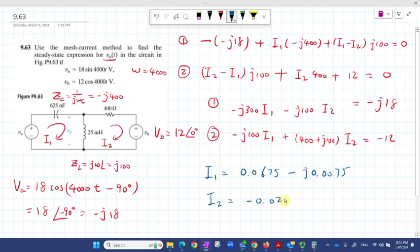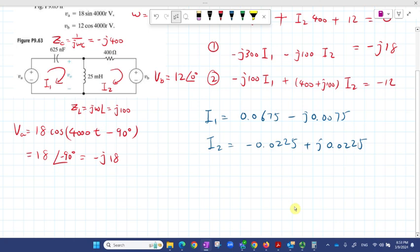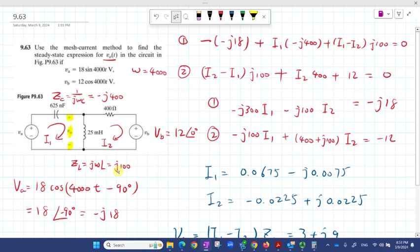After you got I1 and I2, the voltage across here is easy. What you're gonna do is V0 equals I1 minus I2 multiplied by that ZL. So we got 3 + j9 here. We want to bring it into polar form because in the end we want the time domain expression.